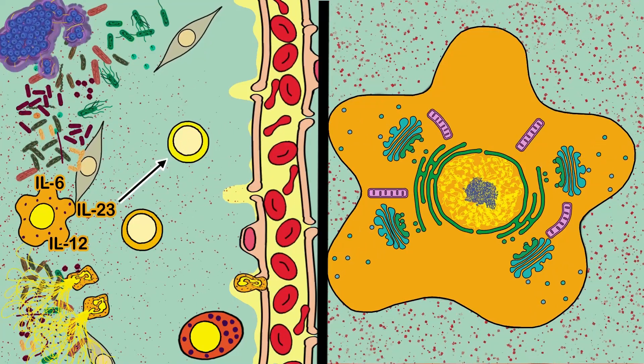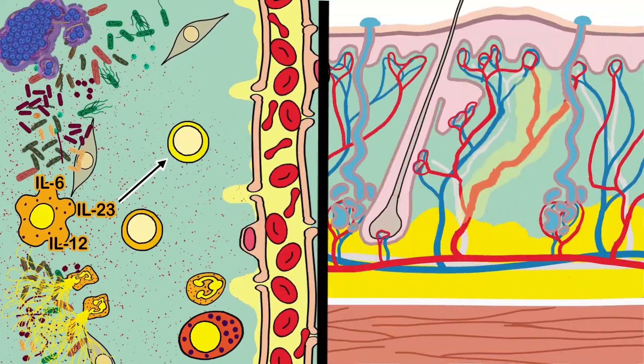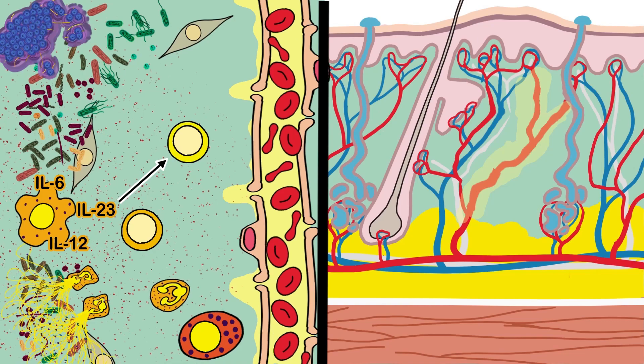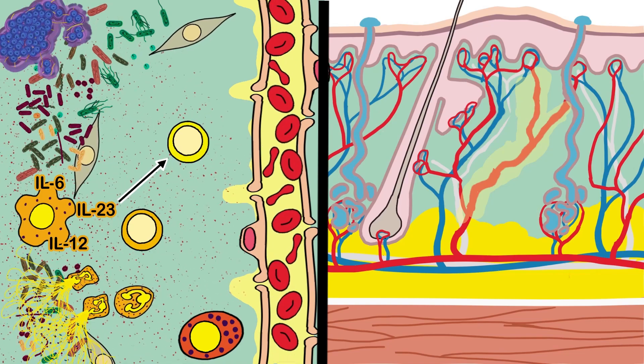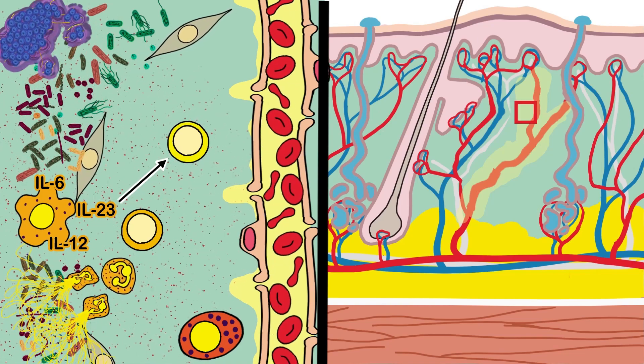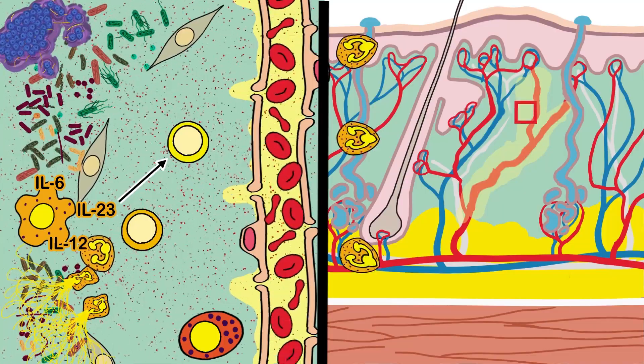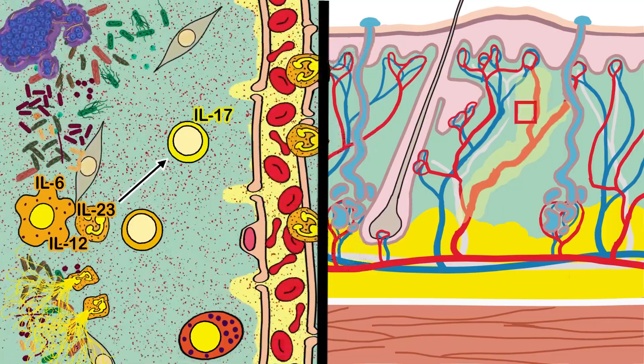Interleukin-23 binds with receptors on type III innate lymphoid cells or ILC3 and activates them. Minutes later they start releasing chemokines that only attract neutrophils, and IL-17 and IL-22.